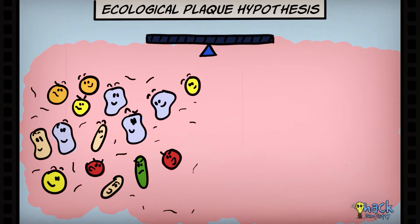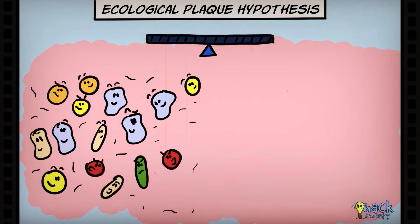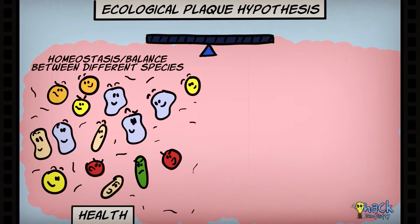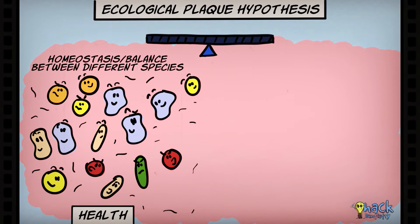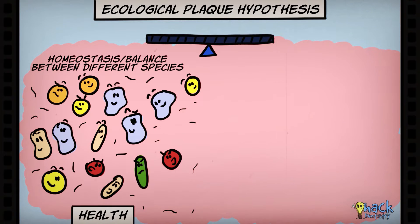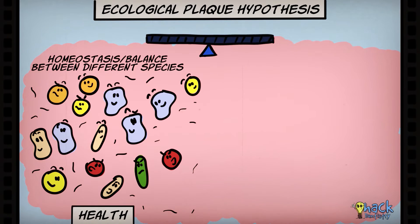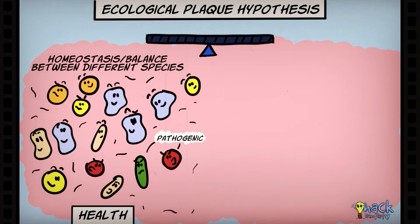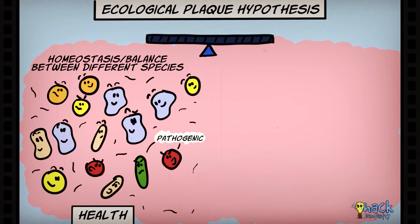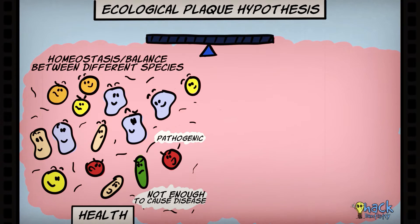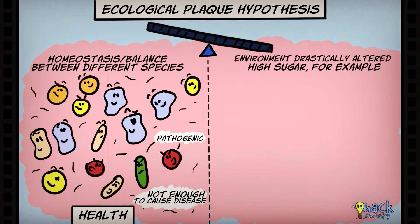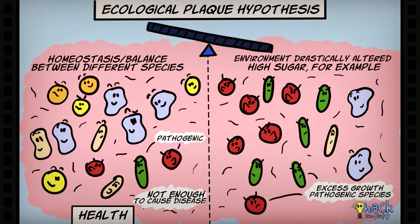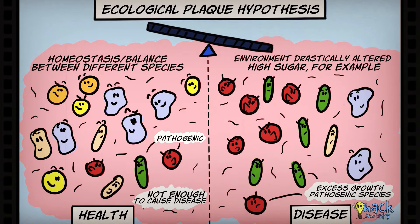Once plaque is formed, the bacterial composition is diverse and varies at different sites. There is a microbial homeostasis or balance maintained between the different species of the microbial community in the plaque, in spite of subtle changes in environmental factors like salivary flow, diet or host defense mechanisms. Plaque could also harbor pathogenic disease-causing bacteria, but they are present in very small proportions and not enough to cause disease. However, a major environmental change or ecological shift could lead to an imbalance favoring excess growth and survival of pathogenic species, leading to diseases like dental caries.